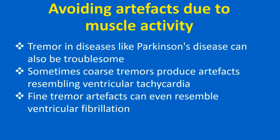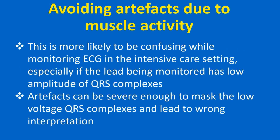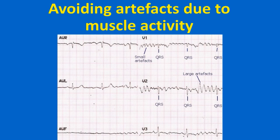Tremor in diseases like Parkinson's disease can also be troublesome. Coarse tremors can produce artifacts resembling ventricular tachycardia, and fine tremor artifacts can even resemble ventricular fibrillation. This is more likely to be confusing while monitoring ECG in the intensive care setting, especially if the lead being monitored has low amplitude QRS complexes. Artifacts may be severe enough to mask the low voltage QRS complexes and lead to wrong interpretation. In this ECG, V1 shows multiple small artifacts almost totally obscuring the small QRS complexes so that at one look it mimics ventricular fibrillation. Close scrutiny and comparison with other leads enables recognition of QRS complexes within the artifacts by their timing with other QRS complexes simultaneously recorded in leads like V3, where the amplitude of the artifacts is much lower than that of the QRS complexes.